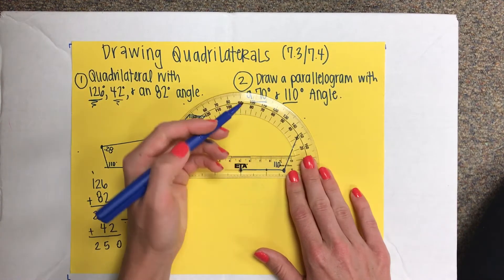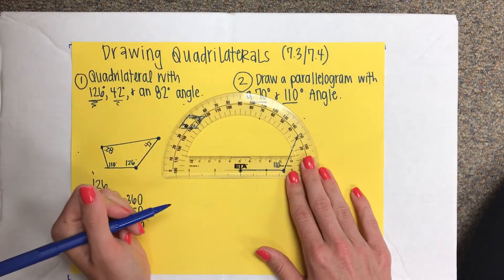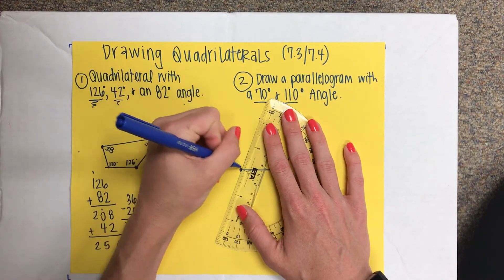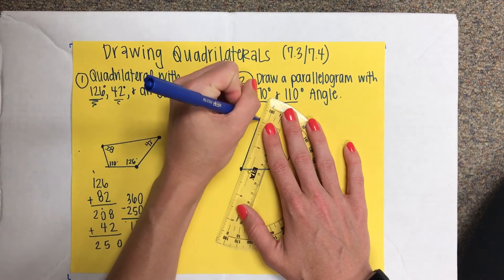40, 50, 60, 70, right here. Tick mark to dot, and draw my straight line.